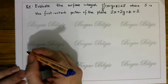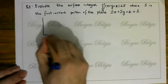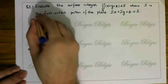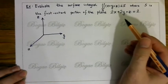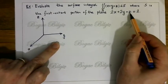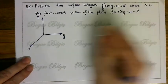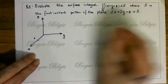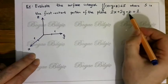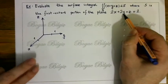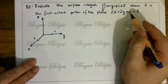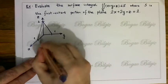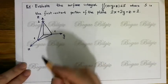Firstly, we can draw the plane. Setting up the axes x, y, z. When y and z are 0, x = 1. When x and z are 0, y = 1. When x and y are 0, z = 2. So this is the first octant portion of the plane.